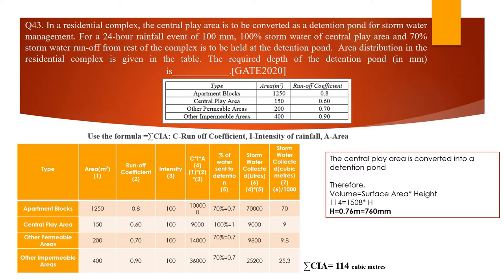I've prepared a small table where the type of area, runoff coefficient, and intensity are clearly listed. Intensity is 100 mm for the 24-hour rainfall event. To find the total runoff from each area, you calculate CIA — runoff coefficient times intensity times area. Now, it says 100% of stormwater from the central play area and 70% from the rest. That means for the 70% portion, you multiply by 0.7 — not 70 — since it's a percentage expressed as a decimal.